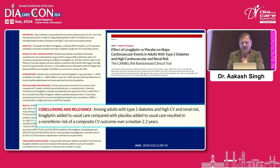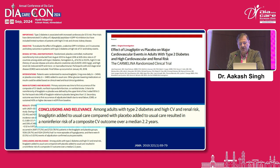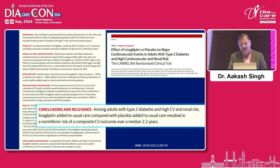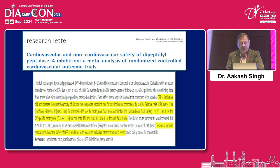This was the Carmelina trial, where high-risk patients with cardiorenal morbidities were enrolled. It was concluded that among adults with type 2 diabetes and high CV and renal risk, linagliptin added to usual care compared with placebo added to usual care resulted in non-inferior risk of composite CV outcome over a median of 2.2 years. It was found to be CV-safe, and the same was confirmed in the Carolina trial, where it was compared head-to-head with sulfonylureas and found absolutely safe on the CV front.